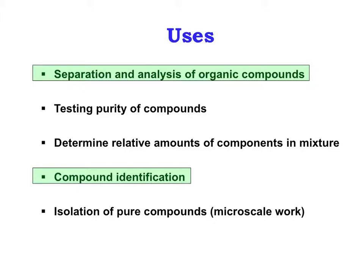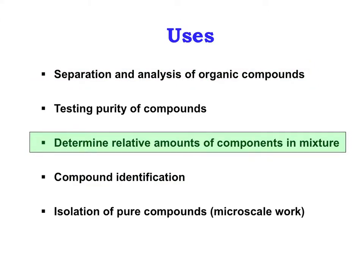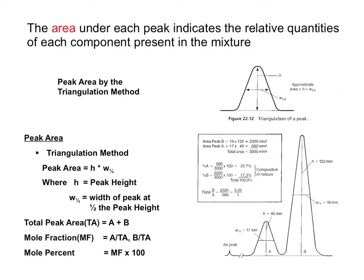A third common use of gas chromatography is to determine the relative amounts of components in a mixture. This is accomplished by measuring the area under each peak. You can do this mathematically by the triangulation method as shown on the slide. Alternatively, you can simply cut out and weigh each peak on an analytical balance. Using this method, the mass of each peak directly correlates to each component's relative quantity.